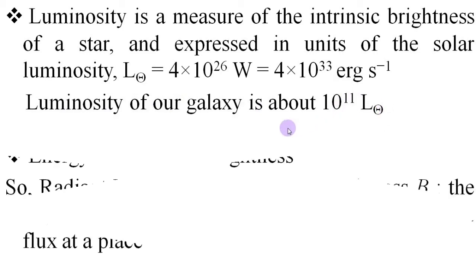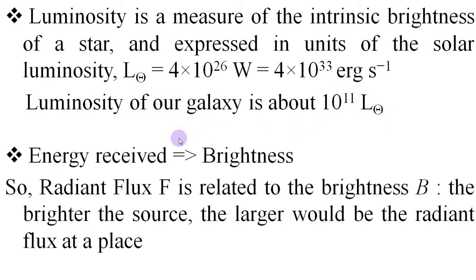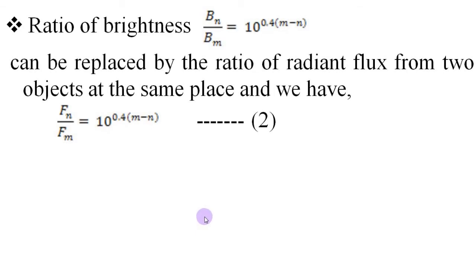Now, the energy from a source received at any place determines the brightness of the source. This implies that radiant flux F is related to the brightness B of the source. The brighter the source, the larger would be the radiant flux at that place. Therefore, the ratio of brightness can be replaced by the ratio of radiant flux from two objects at the same point and we have equation two.